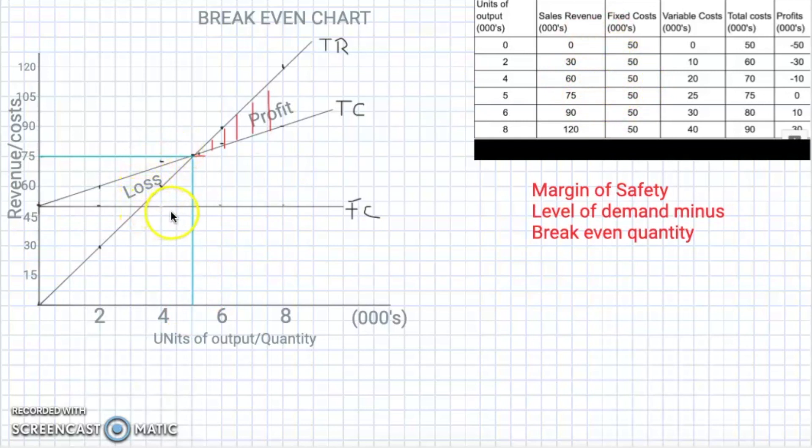You can use a table and you can also use the break-even chart here to understand where the break-even point is. So the break-even revenue or cost on this chart is seventy-five thousand. The break-even quantity is five thousand units.